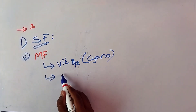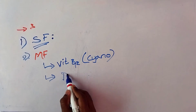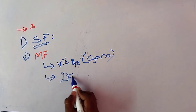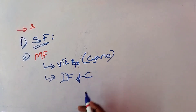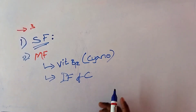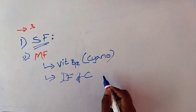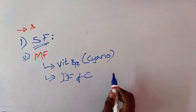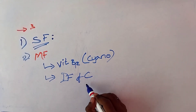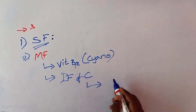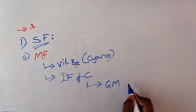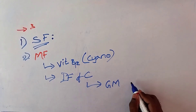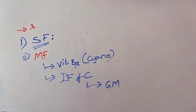The second maturation factor is the Intrinsic Factor of Castle. It is produced in the gastric mucosa by the parietal cells of gastric glands.